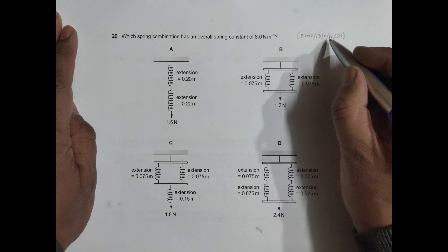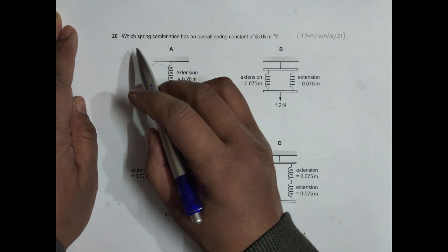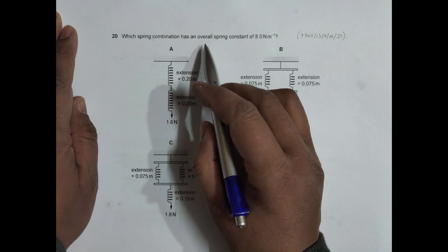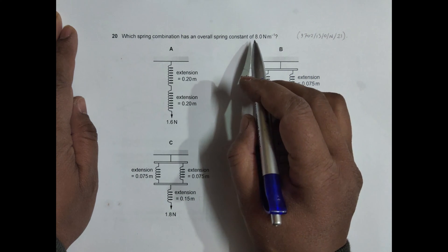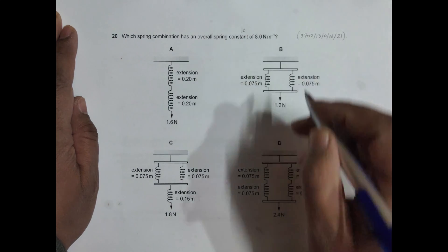Hello folks, this is 2021 October November paper 1-3 and the question number is 20. It says which spring combination has an overall spring constant of 8.0 Newton per meter, so spring constant K equal to this much.